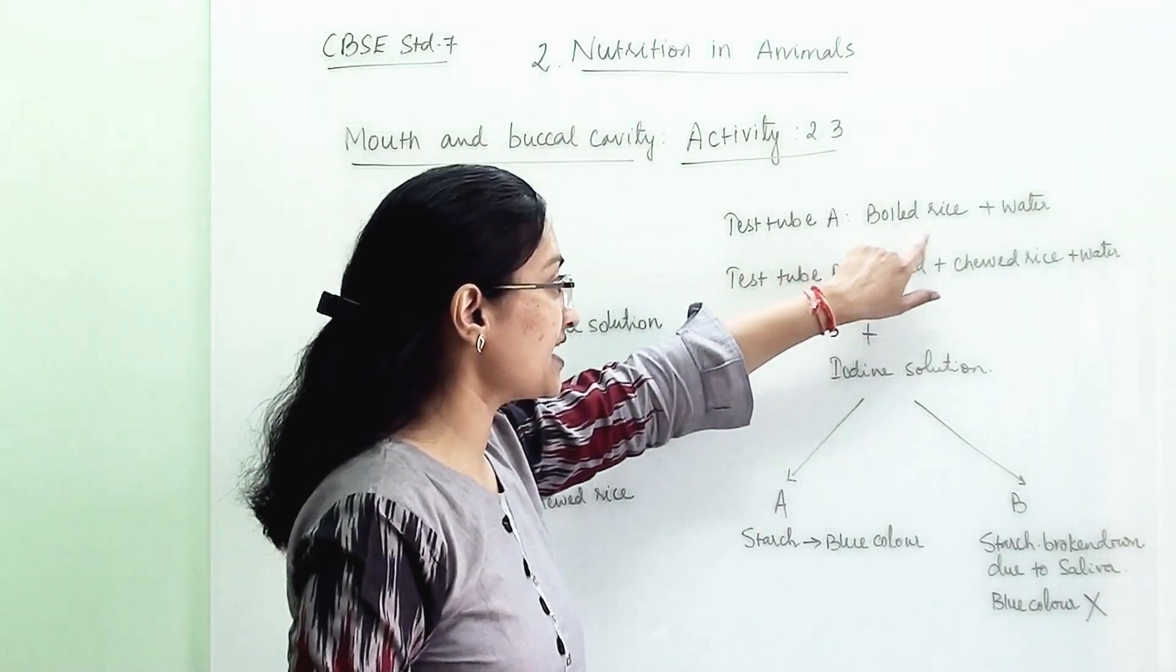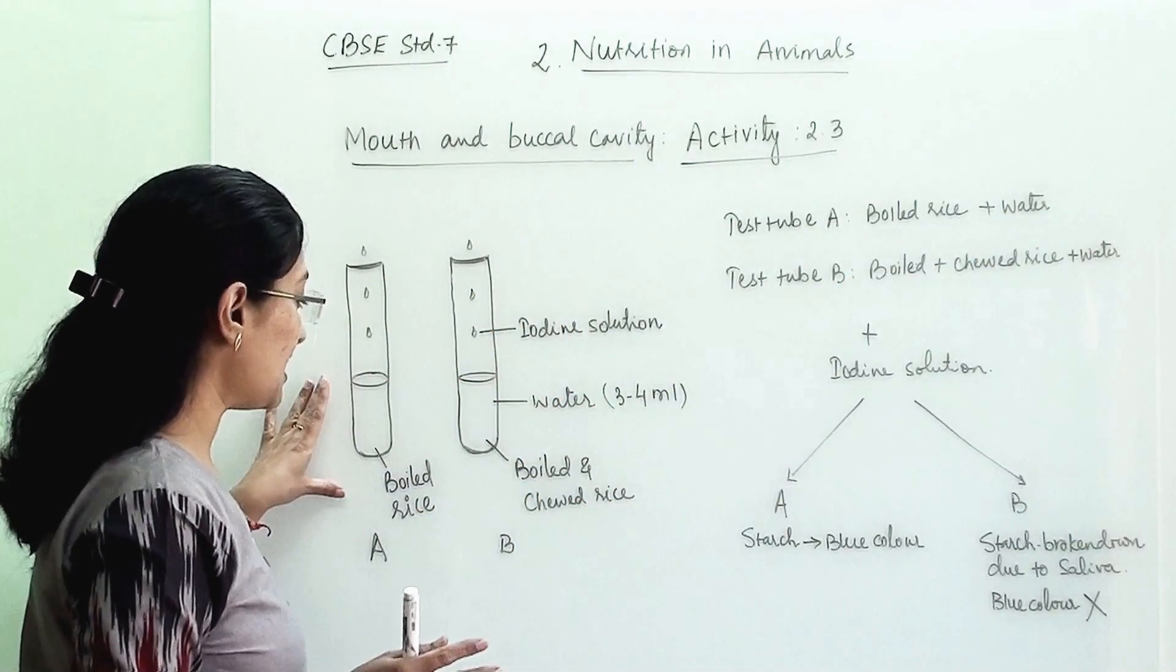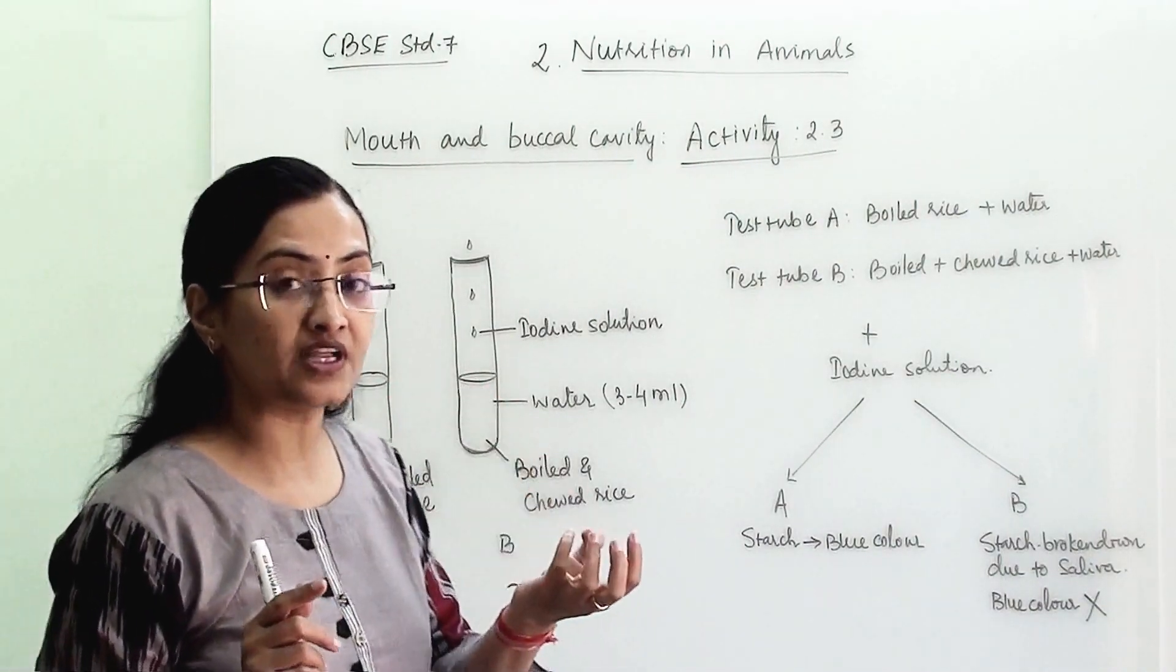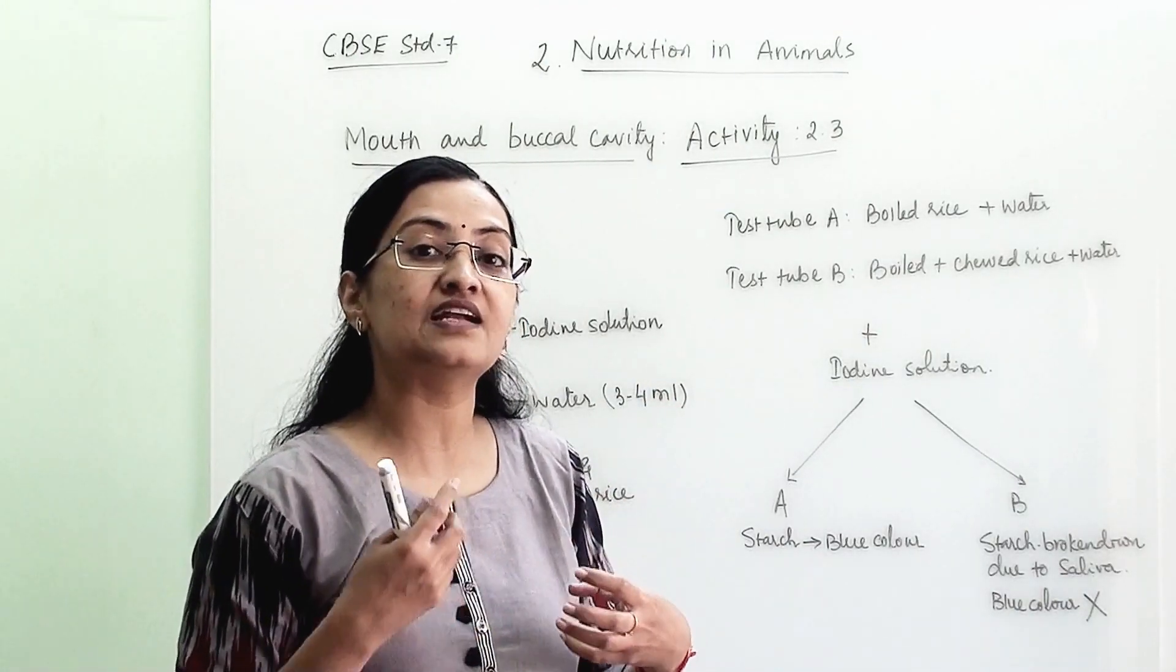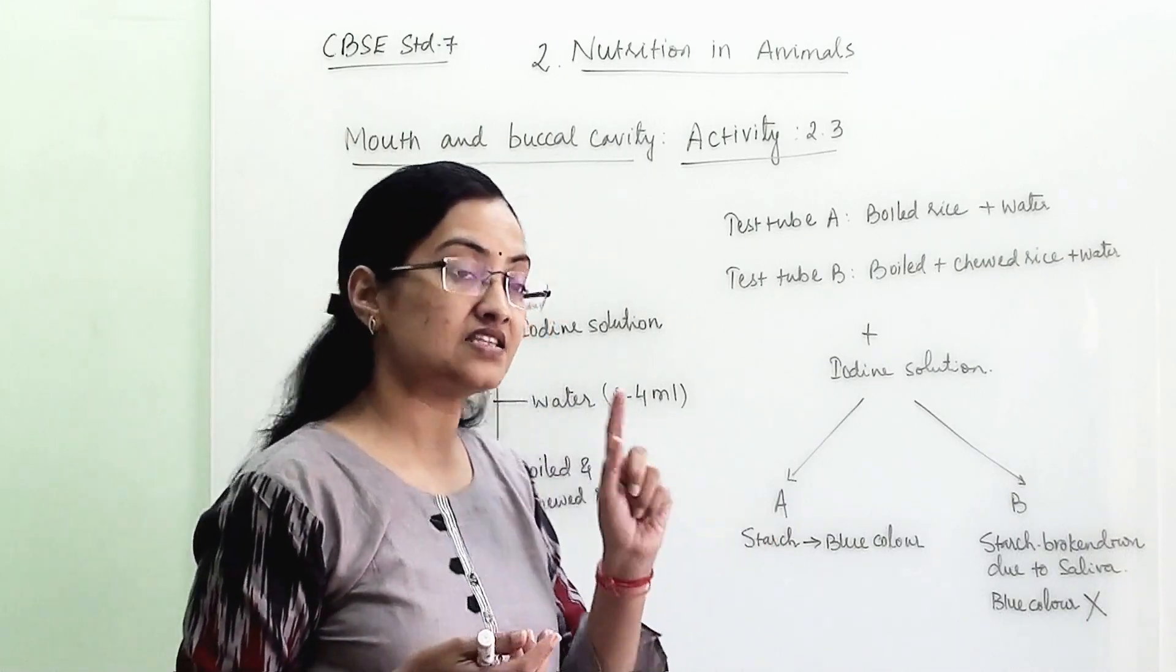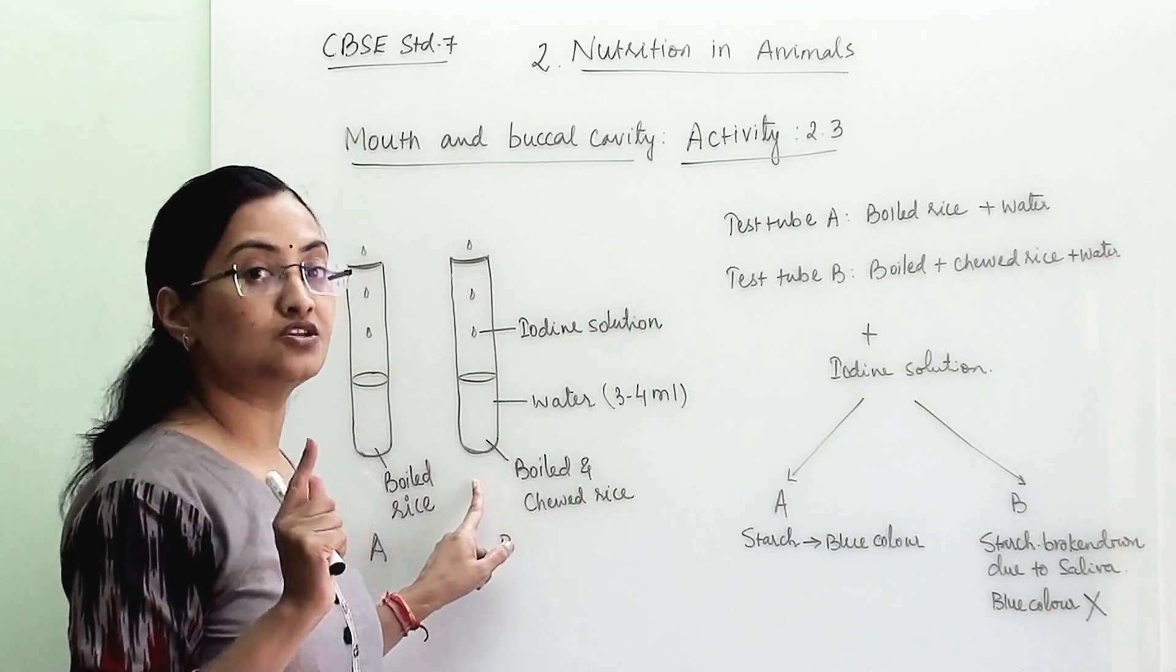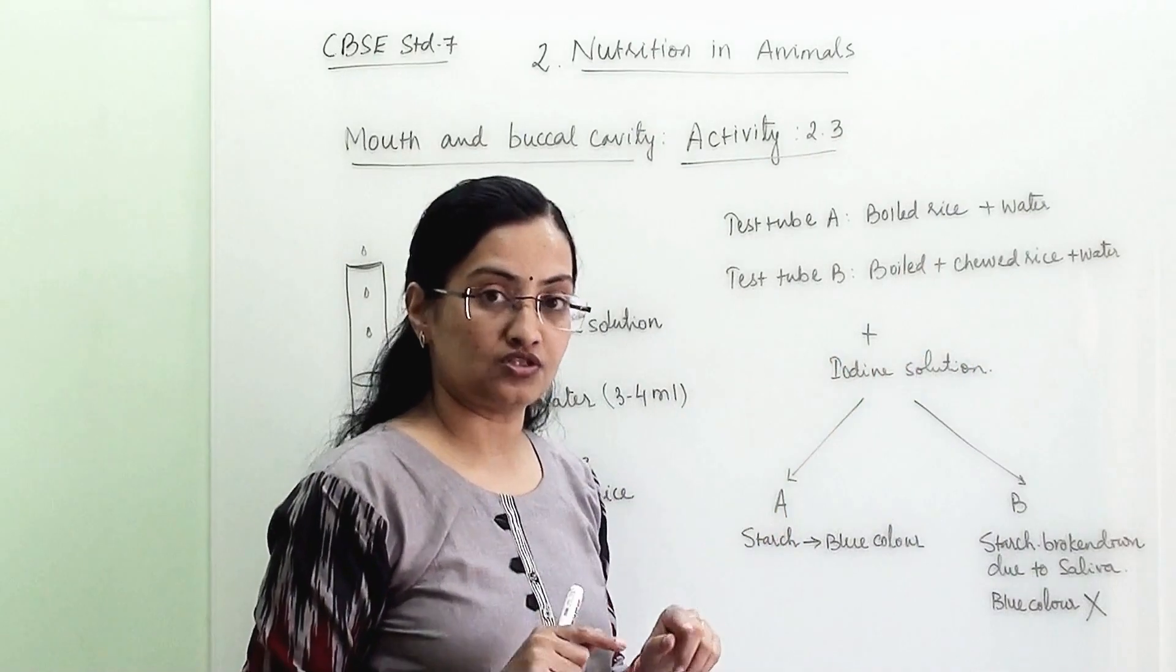In test tube 1, we have taken boiled rice and 3 to 4 ml of water. Into another test tube, we have taken boiled rice but before taking that, we are chewing it a little bit so that our saliva will get mixed with it. After that we are taking out that rice and putting it into this test tube, which has saliva mixed into it, and we are adding 3 to 4 ml of water.